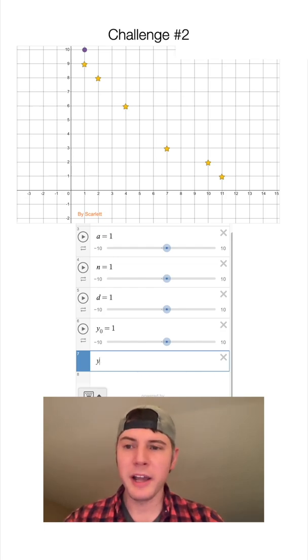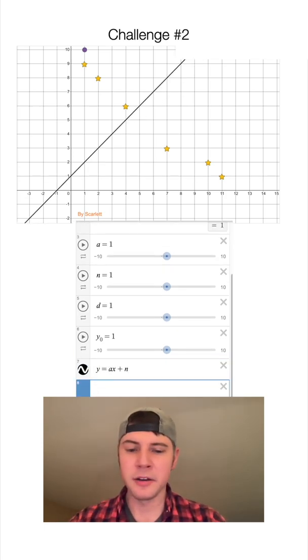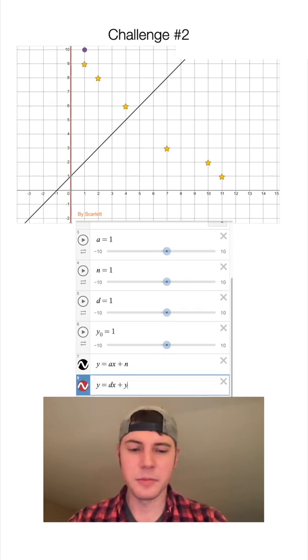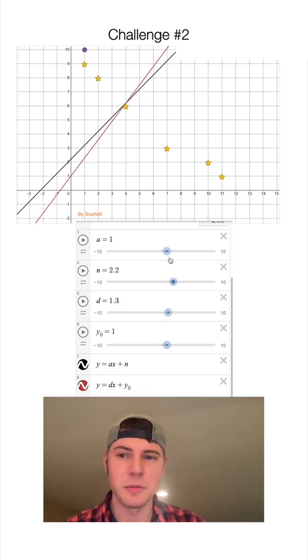So I'm going to write equations based on these parameters. So we'll do some line y equals ax plus n, and then we'll do another line y equals dx plus y sub zero. And so now you can see what happens as I move these, it changes our lines that we created.